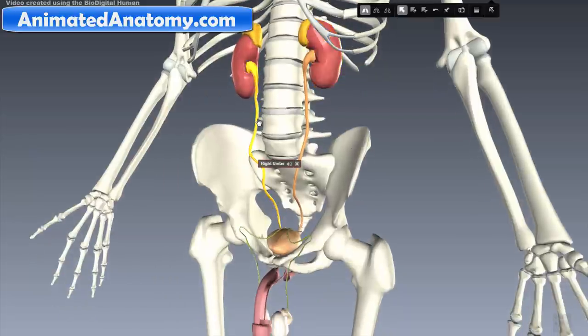Here, what you see here is the ureter. It exits the kidney and it drains the urine all the way down to the bladder.